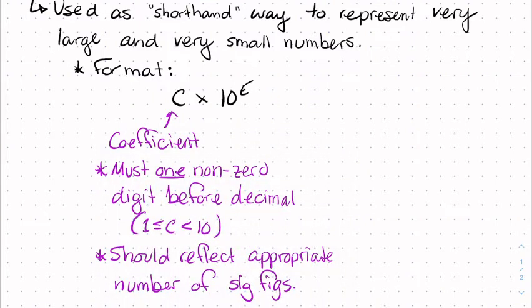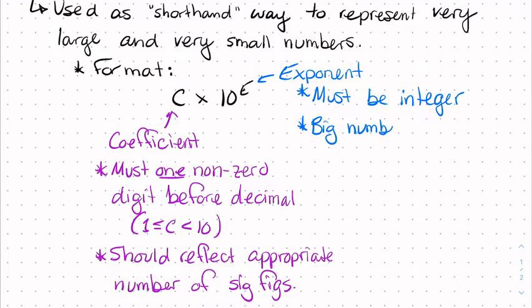On the other side of things here, the other important thing is our exponent. Our exponent in scientific notation must be an integer. And whether it's positive or negative essentially depends on whether your number that you're trying to represent is big or small. Big numbers have positive exponents.